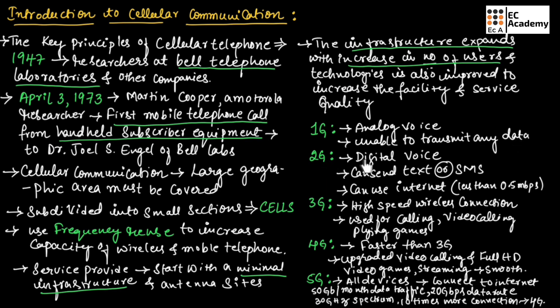In second generation, digital voice calls were enabled. User can make digital voice calls and also send text messages or SMS. In second generation, the user can use internet up to less than 0.5 Mbps, but the speed of internet was very less.